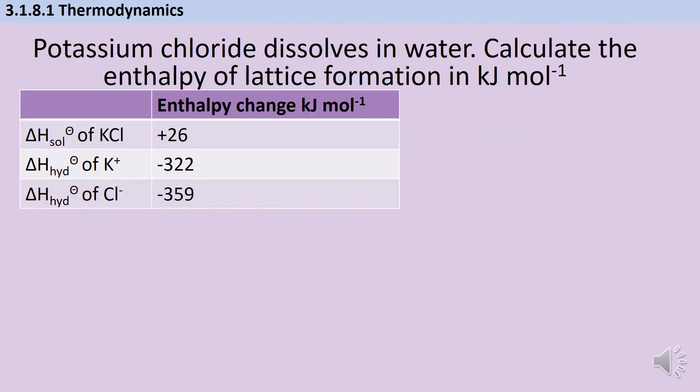I can use these two enthalpy changes together to make a thermodynamic cycle. That's useful because Hess's law tells me that the overall enthalpy change for a process is independent of the route taken. Using these together allows me to calculate an enthalpy of lattice formation, which is the enthalpy change when one mole of solid ionic compound is made from gaseous ions. That's not a process you can measure directly, so it's useful to calculate it using a thermochemical cycle.